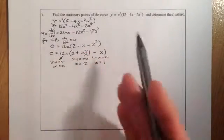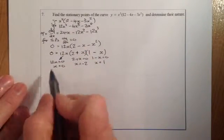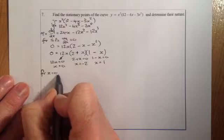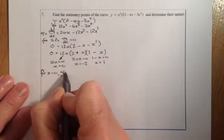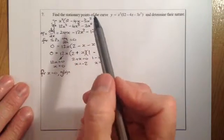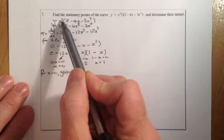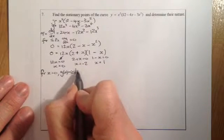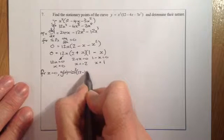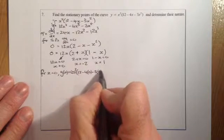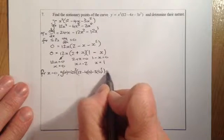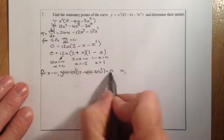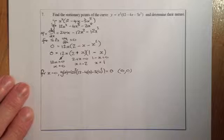Because I need the stationary points, I need to find the y-values as well. For x equals 0: substituting into the original equation, y equals 0 squared times (12 minus 4 times 0 minus 3 times 0 squared), which gives y equals 0. So the first stationary point is (0, 0).